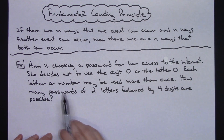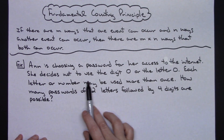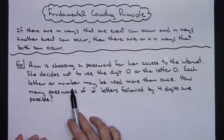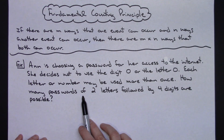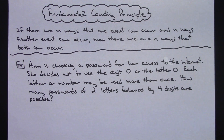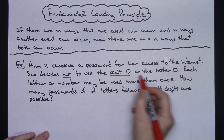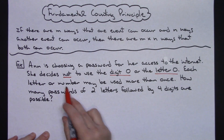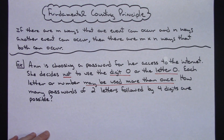For this first example, Ann is choosing a password for access to the internet. She decides not to use the digit zero or the letter O, and each letter or number may be used more than once. How many passwords of two letters followed by four digits are possible? There are some key things here that are important — she's omitting the digit zero and the letter O, and each letter or number may be used more than once. That's going to be crucial.